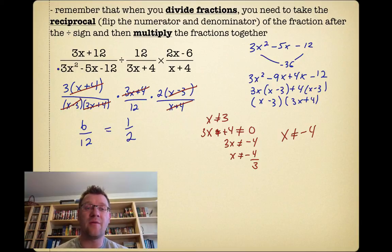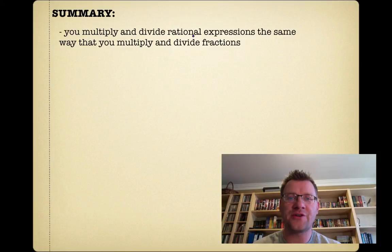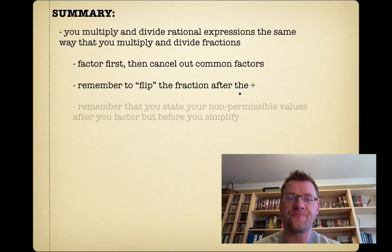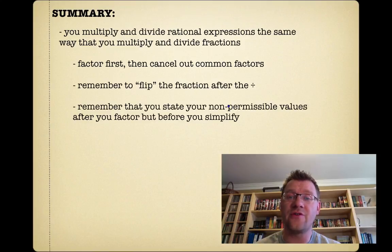You need to be able to factor, flip a fraction when you're dividing by that fraction, and state your non-permissible values or restrictions. Then cancel things out that appear on the top and bottom. In summary, you multiply and divide rational expressions the same way that you multiply and divide fractions. You factor first, then cancel out common factors. Remember to flip the fraction after a dividing sign. Also remember that you state your non-permissible values or restrictions after you factor, but before you start simplifying.